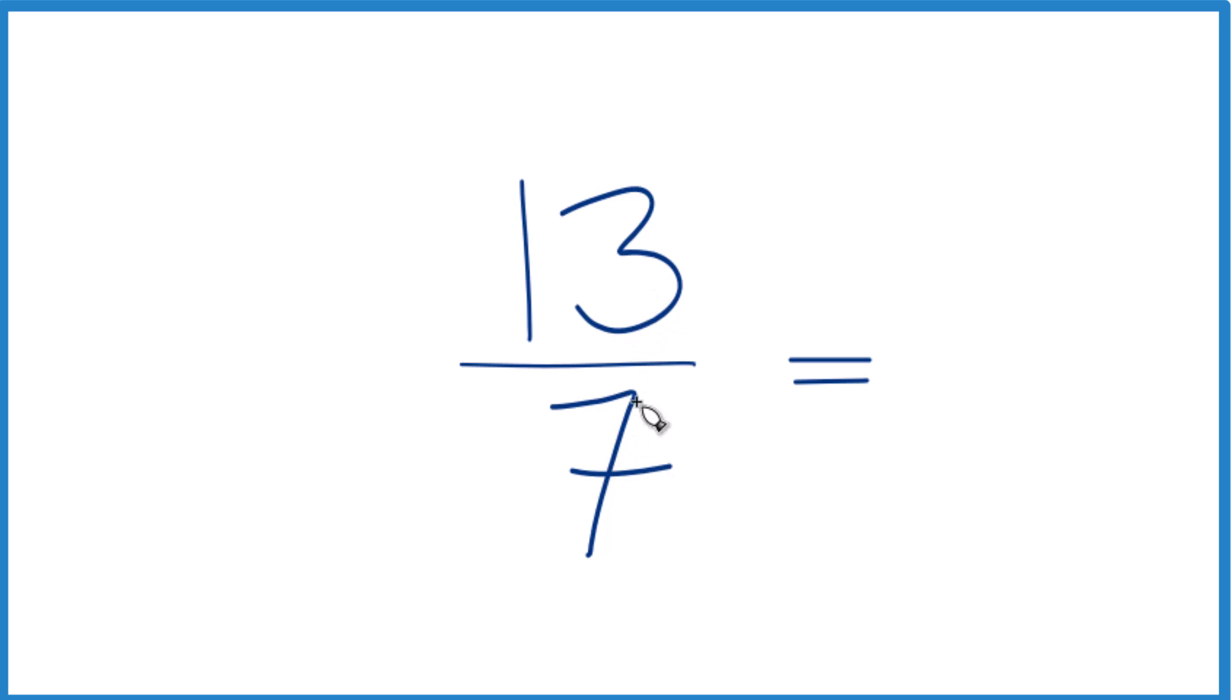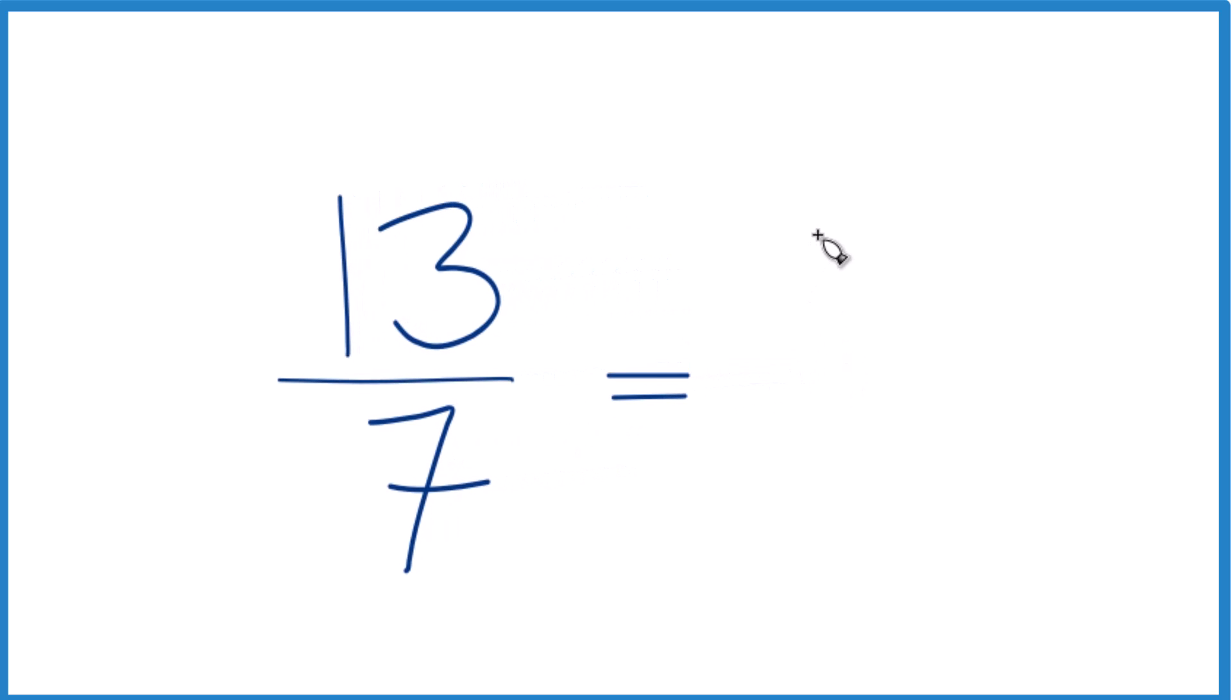1 times 7 is 7. That fits. 2 times 7 is 14, so that's not going to work. So we'll go with 1. 1 times 7 is 7, and we have a remainder of 6.